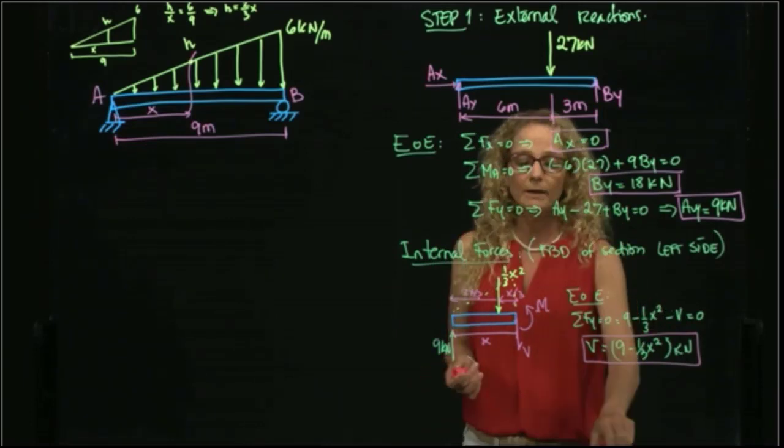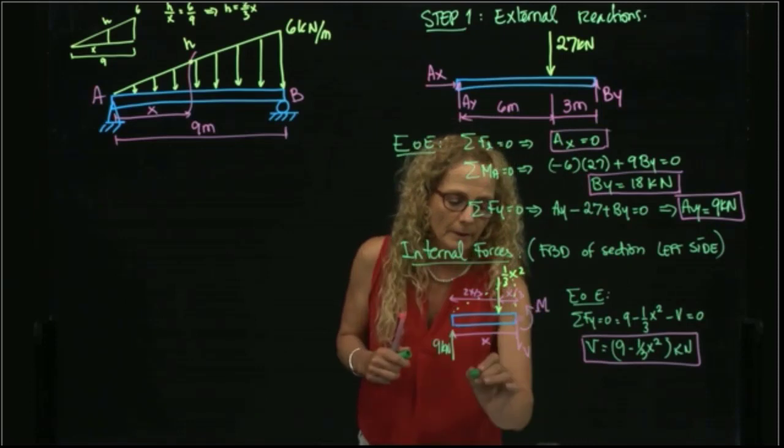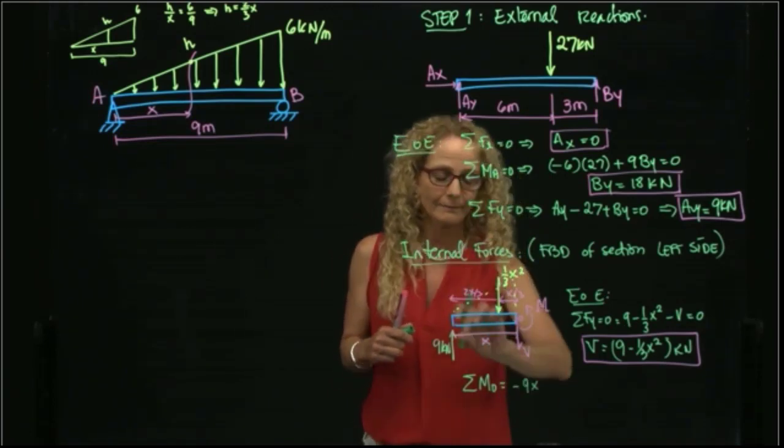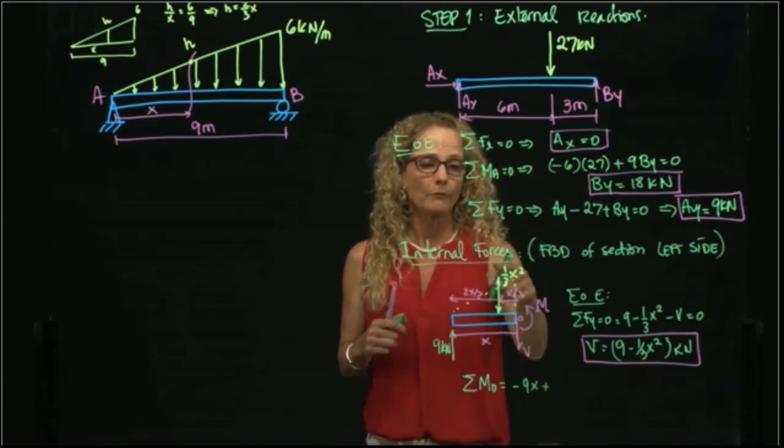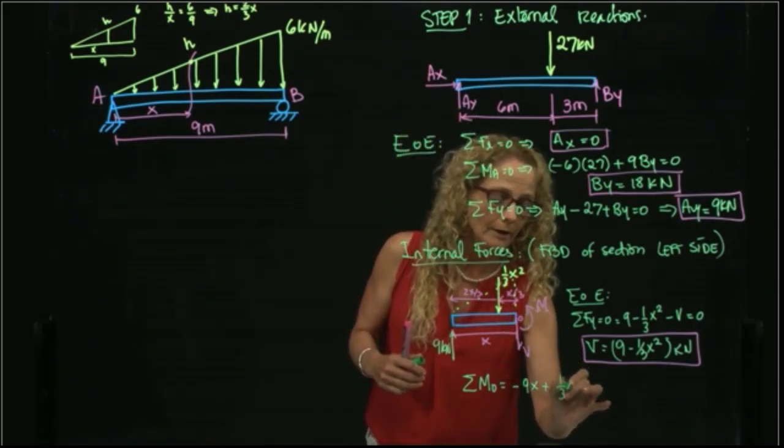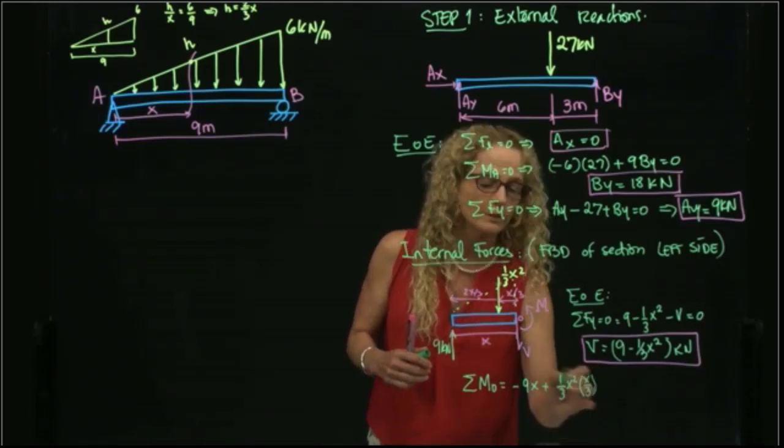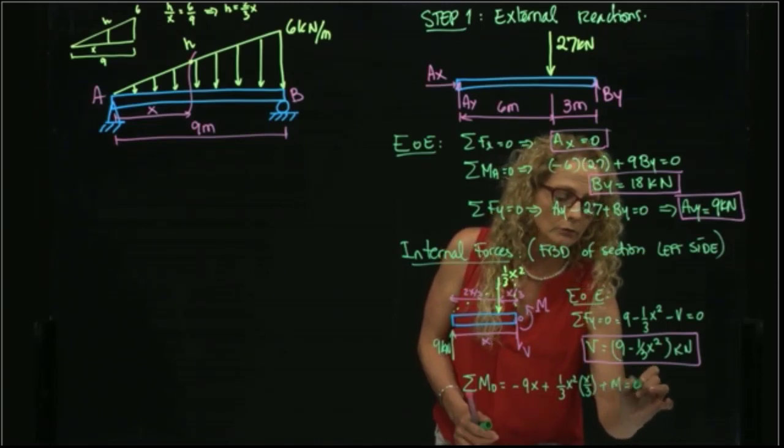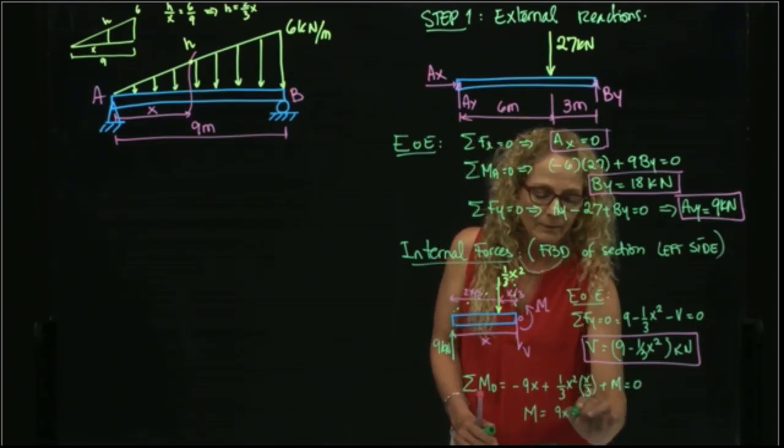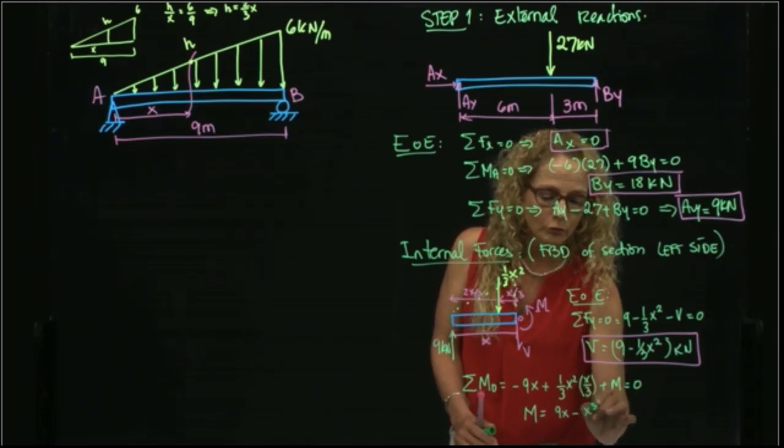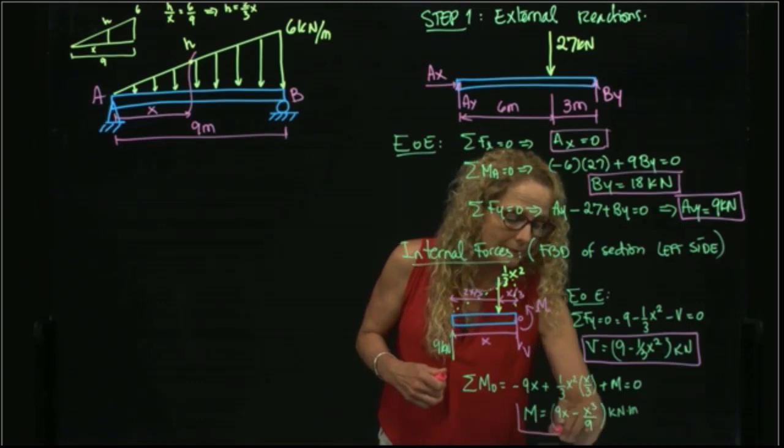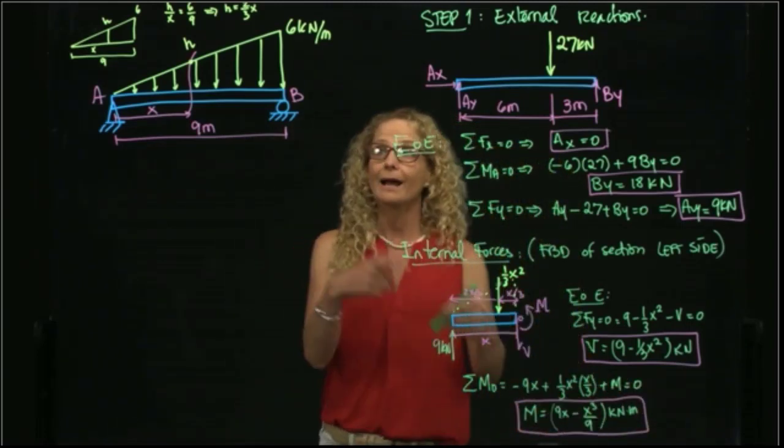Now I take moment. I will take moment at the point where I cut, and I have my moments at O equal to negative 9X, plus my moment produced by this distributed load that I put as a concentrated load, which will be equal to one-third X squared times X over 3, plus the moment equals 0. So I solve for my moment, and I get 9X minus X cubed over 9. The units are kilonewton meters. So I got this expression for my moment.